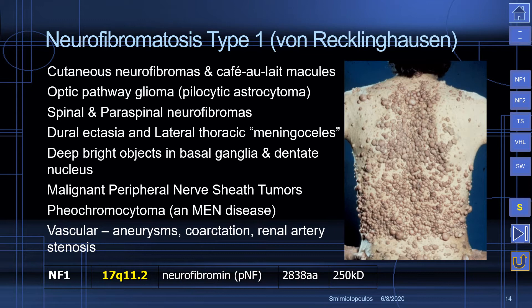Let's begin with the most common and best-known phacomatosis: neurofibromatosis type 1, or von Recklinghausen's disease. This is characterized by multiple cutaneous neurofibromas and café au lait macules, optic pathway gliomas, spinal and paraspinal neurofibromas, dural ectasia including lateral thoracic meningoceles, signal abnormalities in the basal ganglia and dentate nucleus on MR, and the potential for malignant peripheral nerve sheath tumors. These patients can also produce pheochromocytomas, so NF1 is a type of multiple endocrine neoplasia disease. A number of vascular lesions have been reported, including aneurysms, coarctation of the aorta, and renal artery stenosis. NF1 is caused by a mutation on chromosome 17.